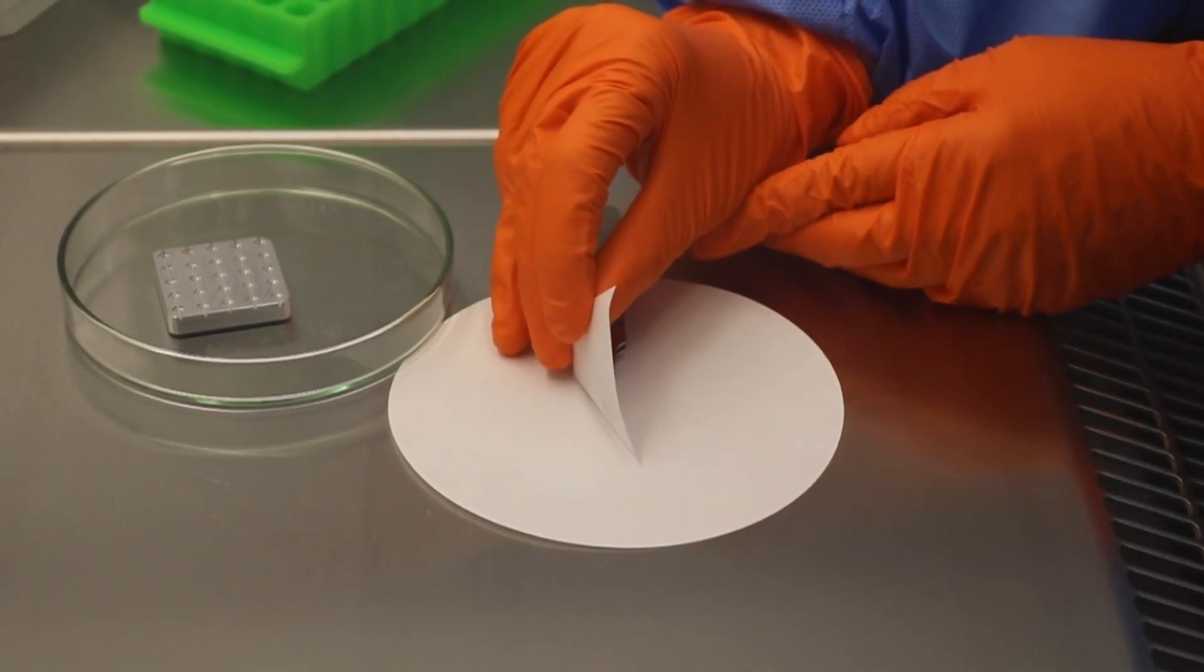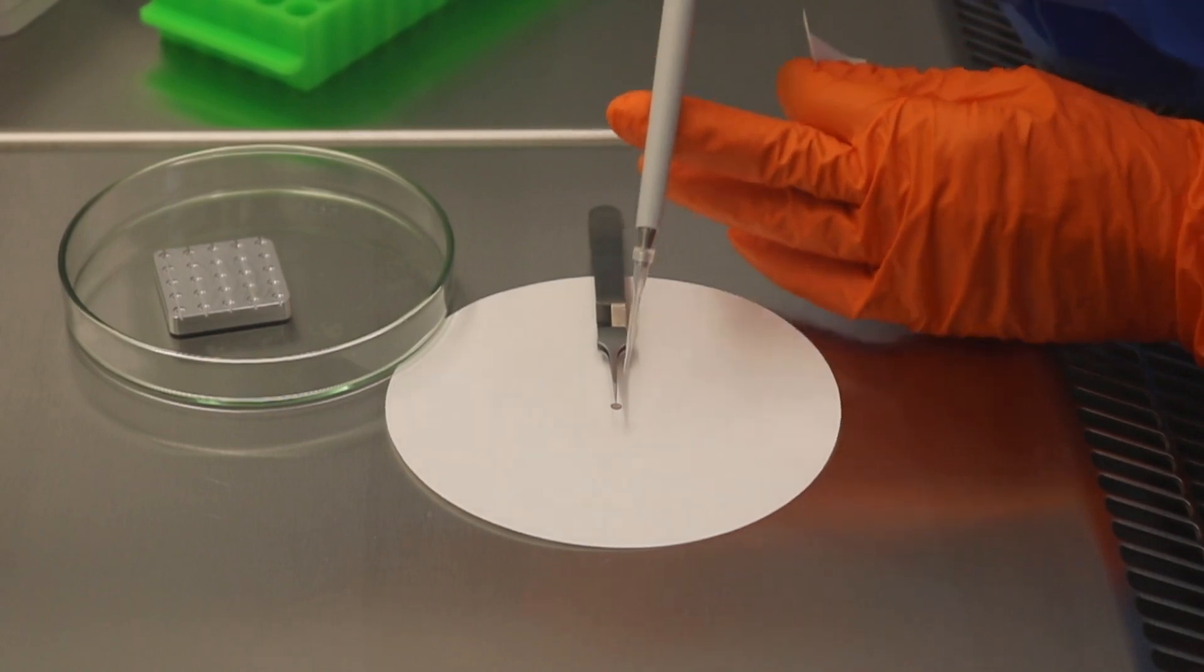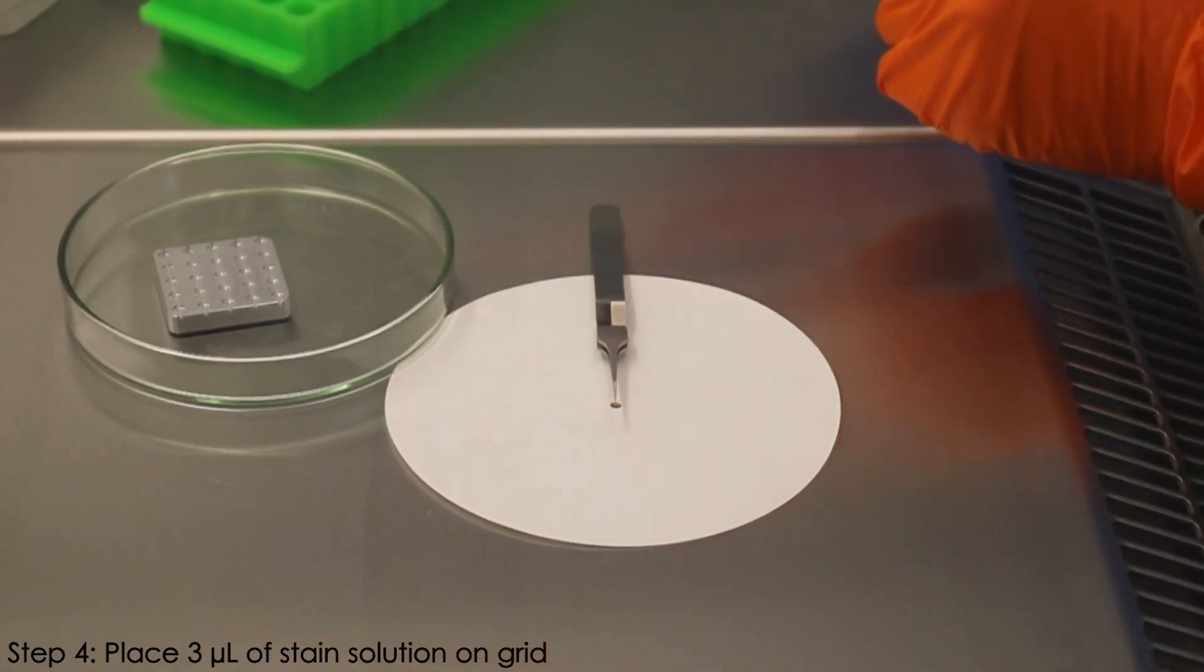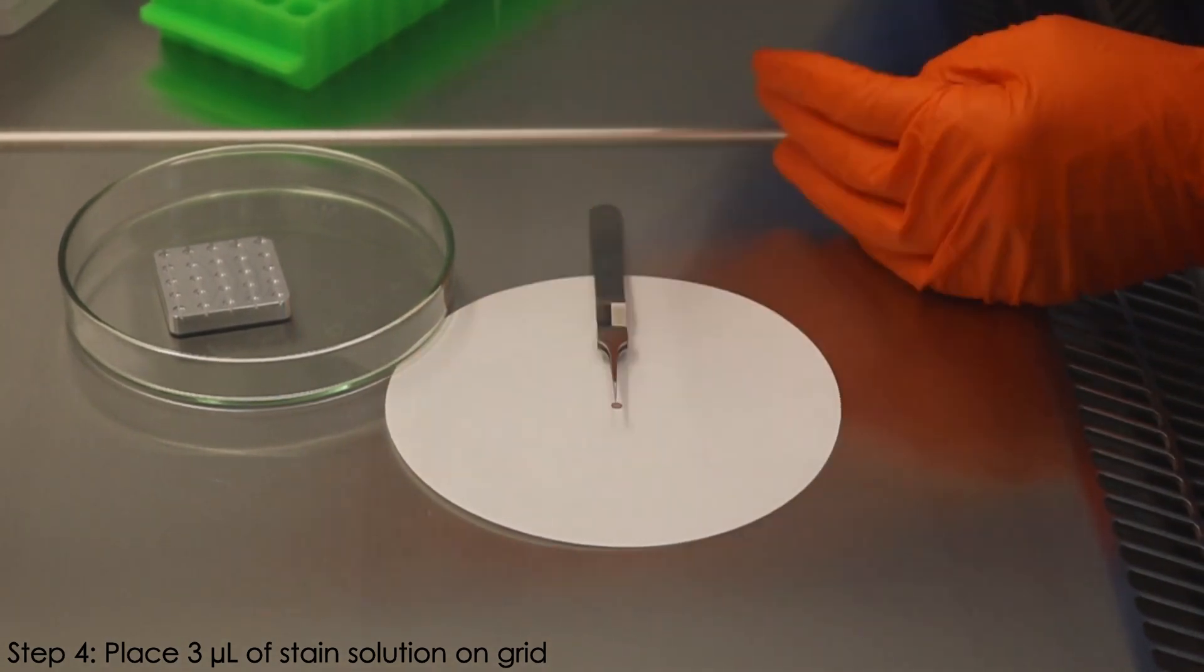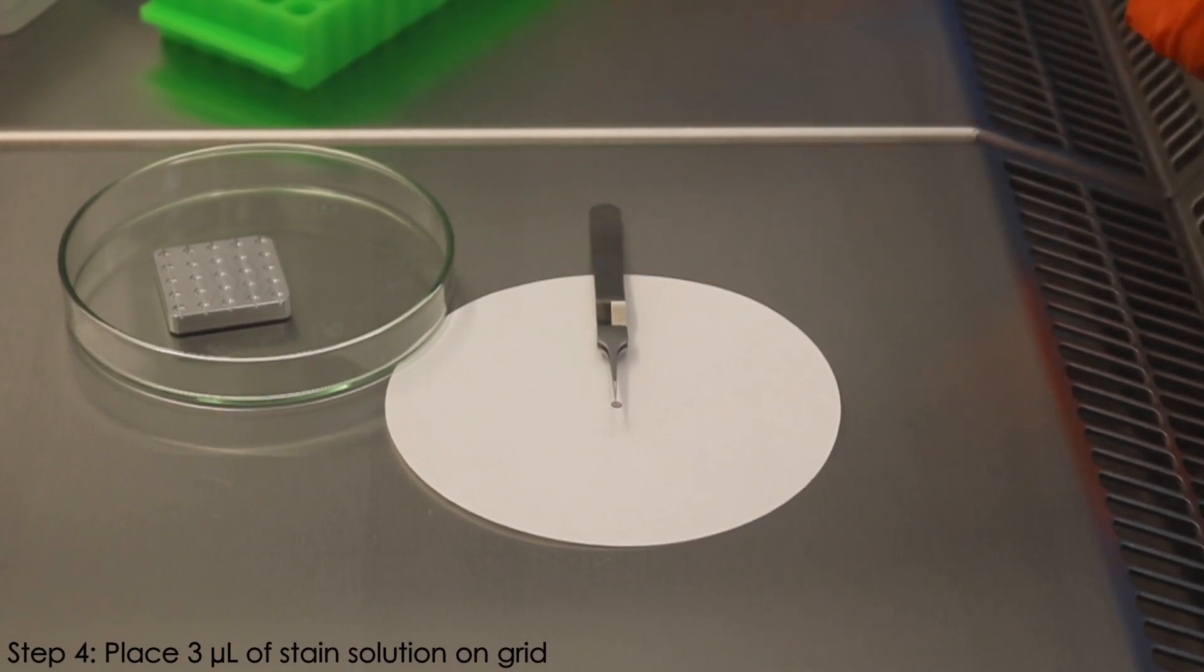Then blot the excess liquid from the grid with a wet blotting paper. Immediately after blotting, place the 3 microliters of stain solution from the prepared pipette on the grid. Wait approximately 10 seconds and then blot the excess of the sample.